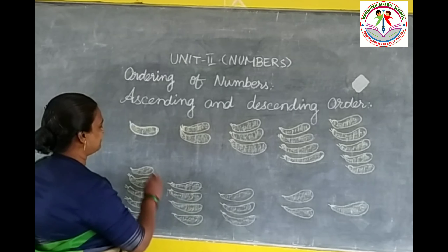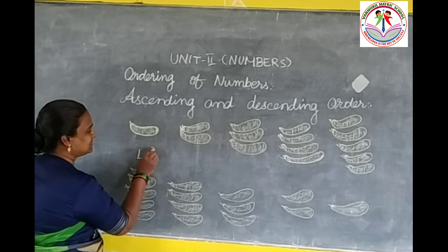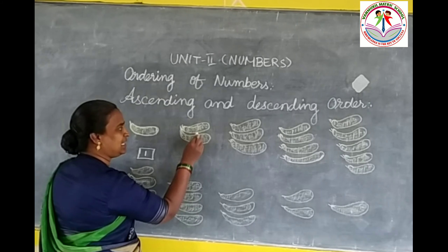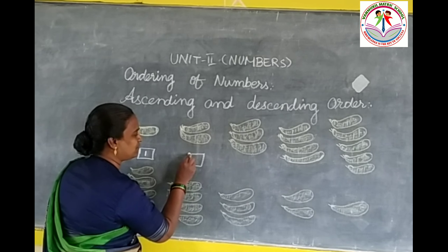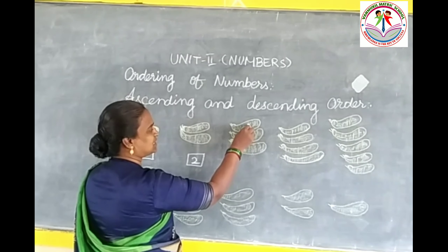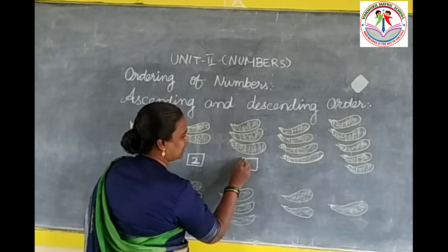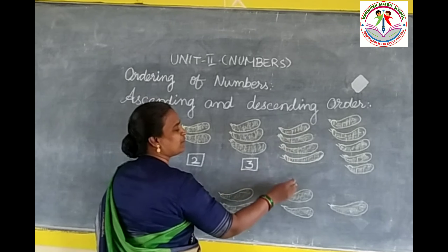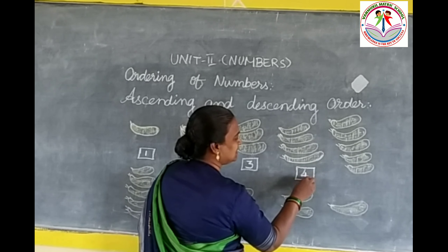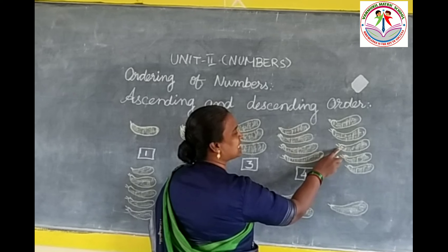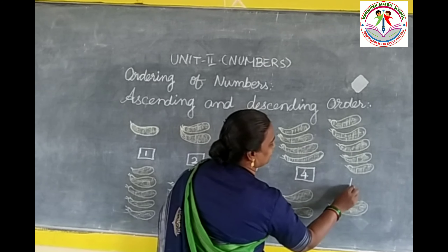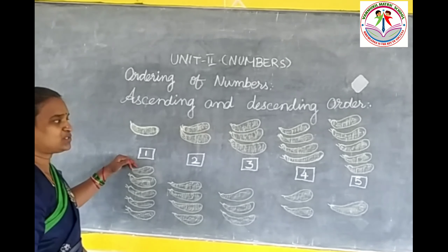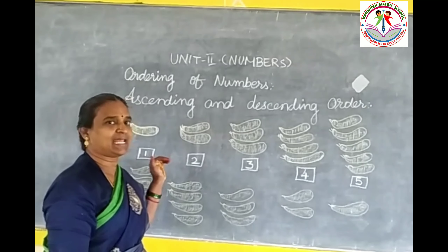For ascending and descending, here some fruits are arranged in some order. Here, how many fruits are there? One. Here, one, two — two fruits. Here, one, two, three. Here, one, two, three, four. And here, one, two, three, four, five — five things.